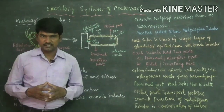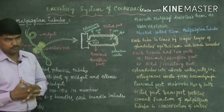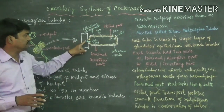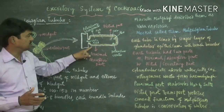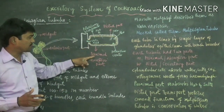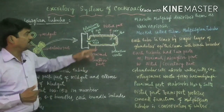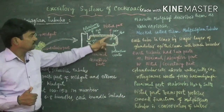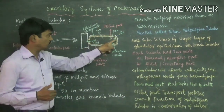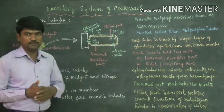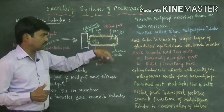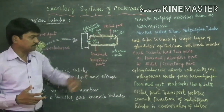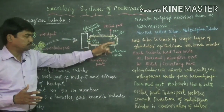The internal structure of each Malpighian tubule includes two specific parts: the anterior or proximal part, also known as the absorptive part, and the posterior or distal part, also known as the secretory part. The inner wall of the Malpighian tubule is lined with a specific glandular epithelium.